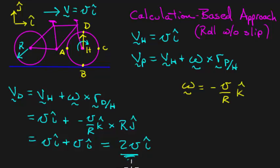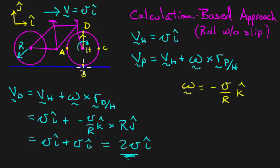The speed at the bottom of the wheel is zero; the speed at the top is twice the speed of the vehicle. Think about driving down the expressway at 60 miles per hour — the bottom of the wheel has velocity zero, and the top of the wheel is going 120 miles per hour. That little patch on the tire goes from 120 miles per hour down to zero and back up again — those are some rather dramatic accelerations.